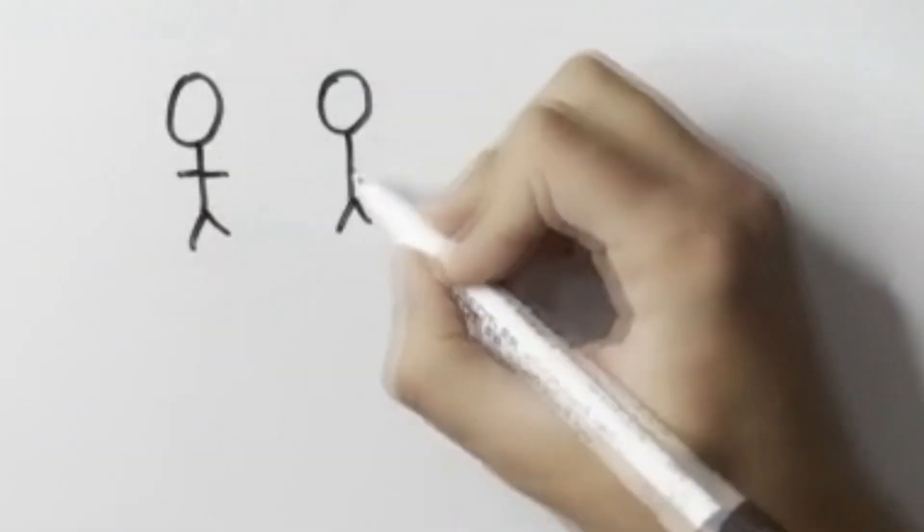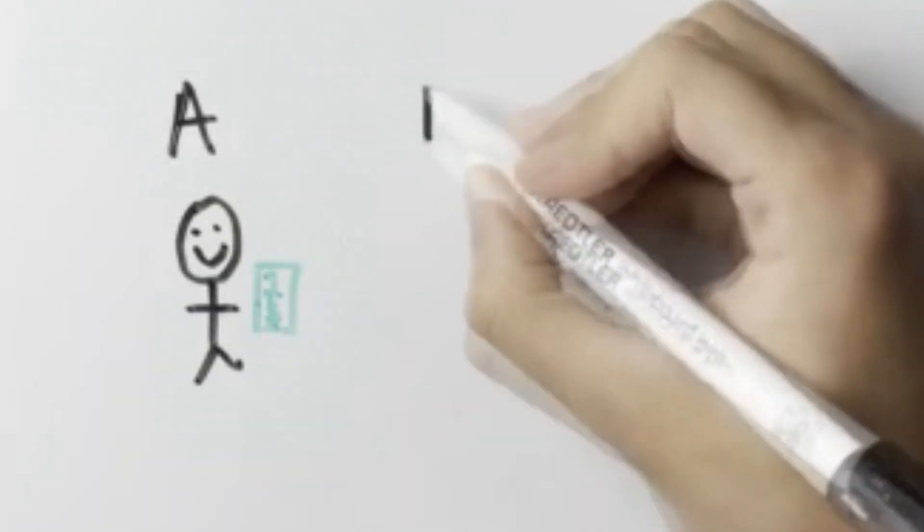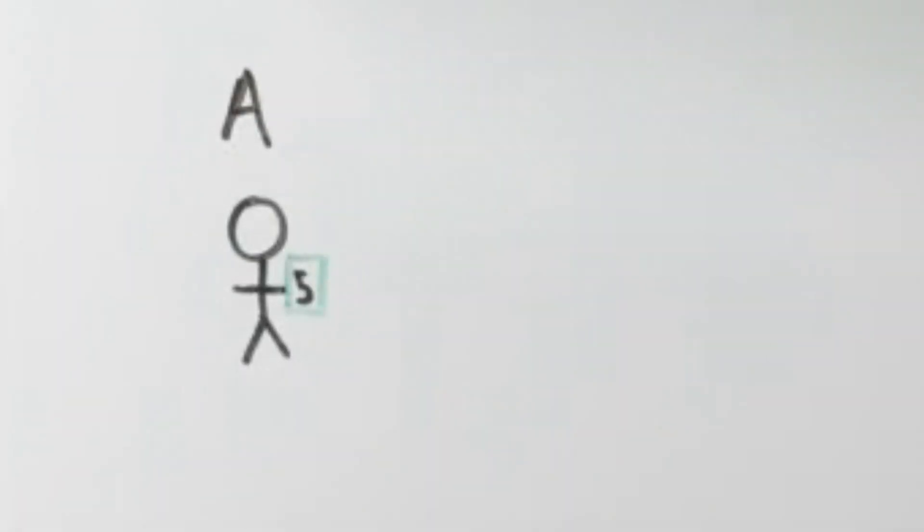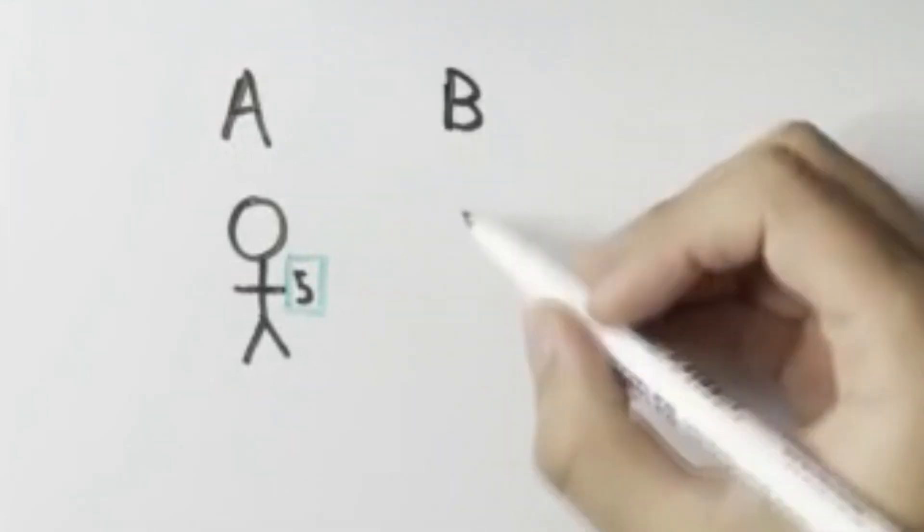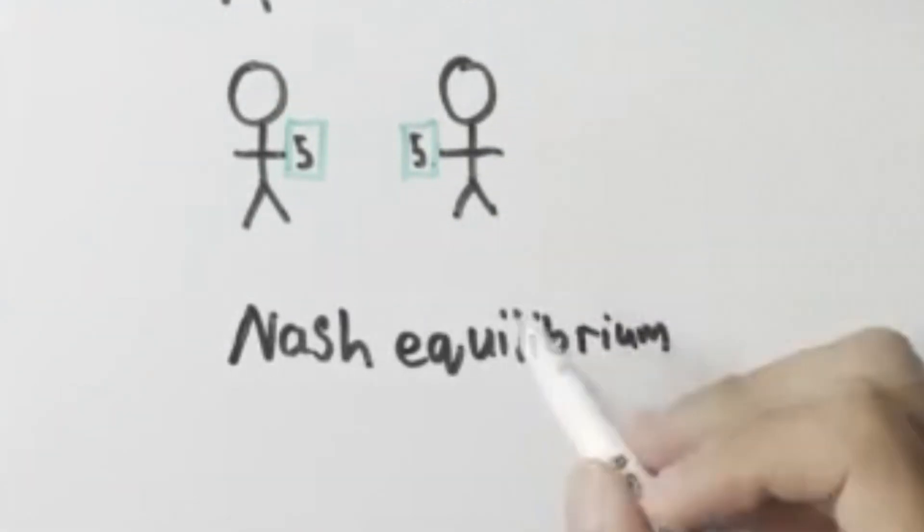So what happened when economists tried this game with real people? The exact opposite of what they'd predicted. When player A's, the ones making the offer, offered $1, the other players rejected the offer and chose instead for both of them to have nothing. Perhaps more surprising is that most player A's offered a 50-50 split of having $5 each. In fact this was the most common outcome, player A offering a 50-50 split and player B accepting. Nothing like the Nash Equilibrium that economists predicted.